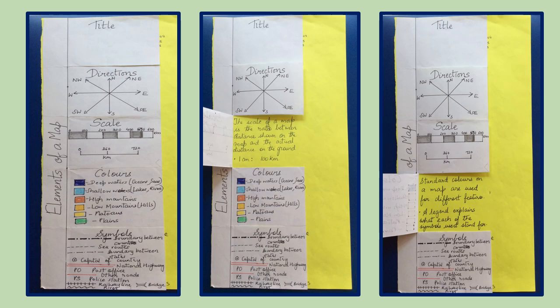The fourth element of a map is color. Standard colors on a map are used for different features. A legend explains what each of the symbols used stand for. We have dark purple or dark blue that indicates deep waters like oceans and seas.